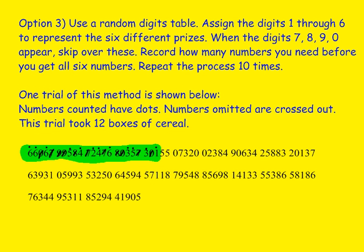Option three would be using a random digits table. Random digits tables are typically set up with groups of five random digits in rows, and you keep moving across the rows. Below you can see a partial random digits table. You would assign the digits one through six to represent the six different prizes. The other digits — seven, eight, nine, and zero — we define as ones we skip over, because they do not designate a prize. Then we record how many numbers we get before we see all six digits, and repeat that process ten times.